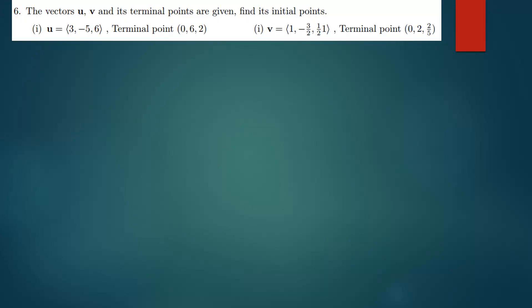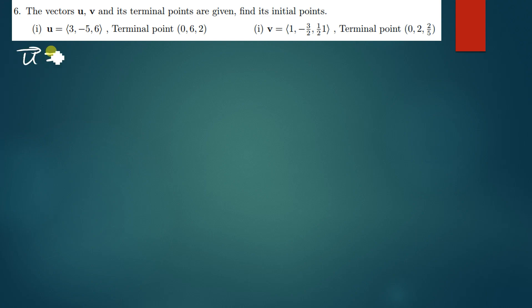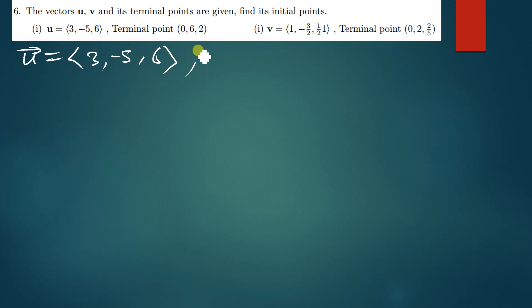So the question says: vector UV and its terminal point are given — find its initial point. The first vector we've been given is vector u, given as (3, -5, 6), and the terminal point of this vector has been given as (0, 6, 2).